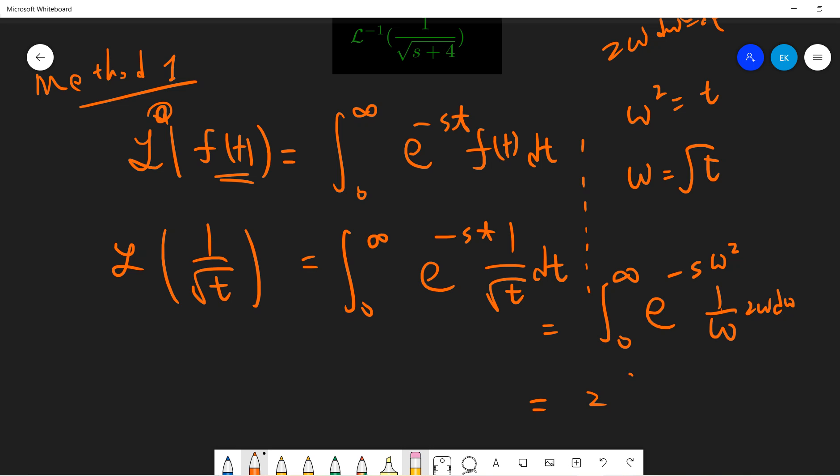This is 2, 0 to infinity, exponential minus S of omega squared, and we know that this is the Gauss integral, so the answer will be square root of pi divided by s, right?